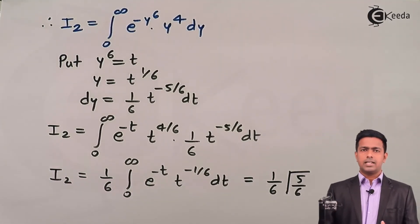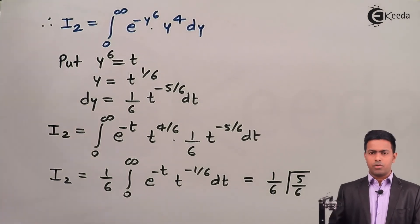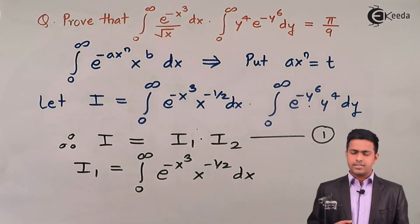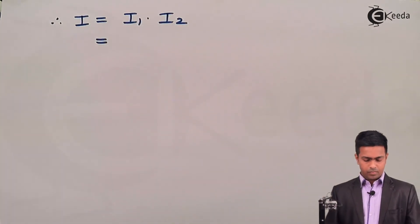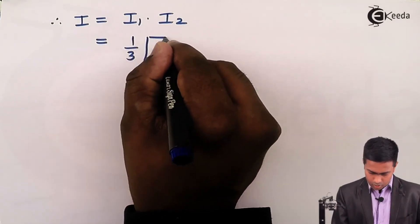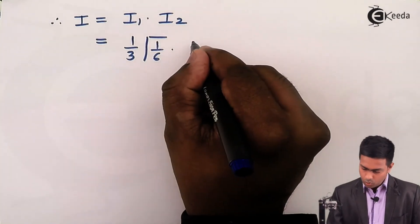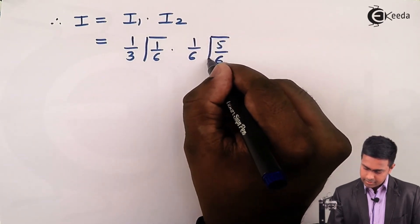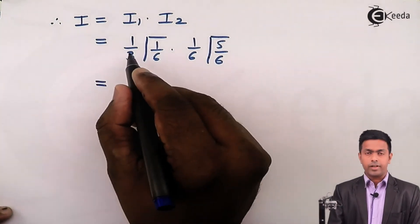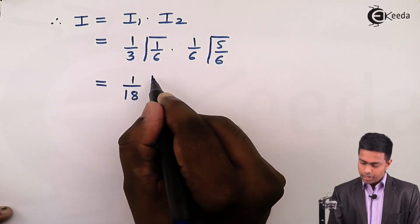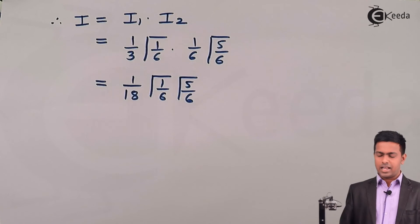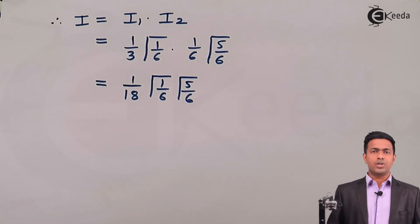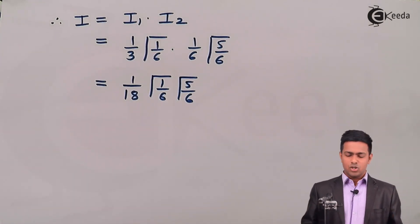Now we substitute both values into equation (1): I = I₁ × I₂ = (1/3)·Γ(1/6) × (1/6)·Γ(5/6) = (1/18) · Γ(1/6) · Γ(5/6). Note: do not multiply the values inside the gamma — that is a common mistake students make by treating it like a product under a square root.